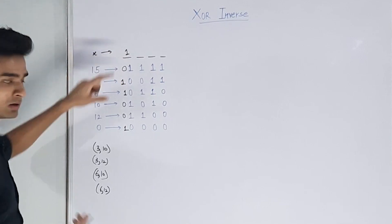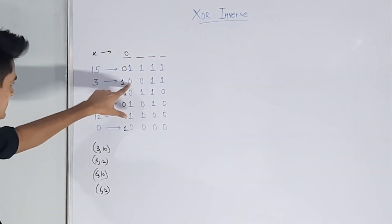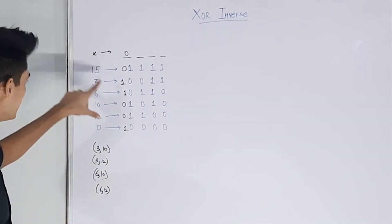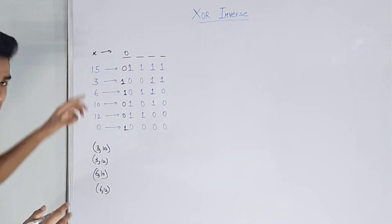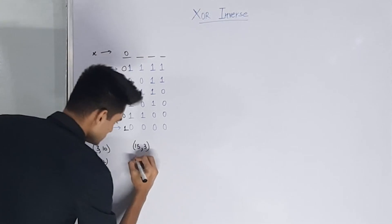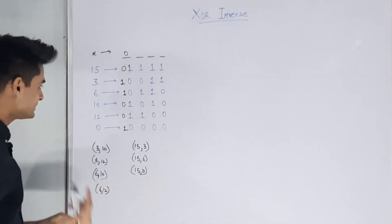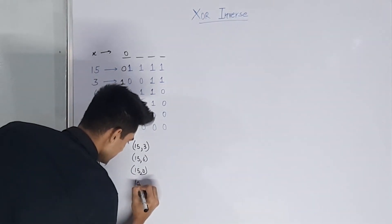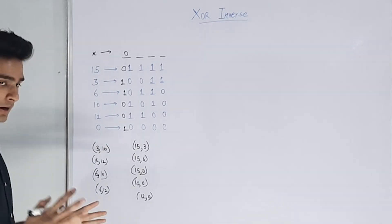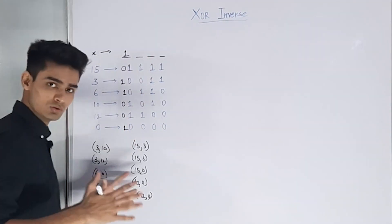Now let's try setting this bit to 0. If this bit is 0, then XOR of 15 gives 1, then 0, 0, 1, 1, and 0. Counting inversions: 15 after XOR is 1 and 3 after XOR is 0, so (15, 3) is an inversion. Then we get (15, 6), (15, 0), (10, 0), and (12, 0) — giving 5 guaranteed inversions when this bit is 0. Since bit=0 gives 5 inversions and bit=1 gives 4, we fix this index as 1.